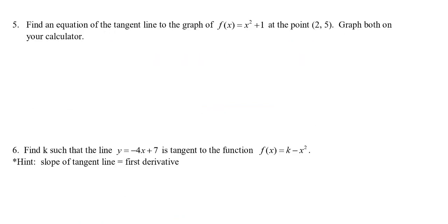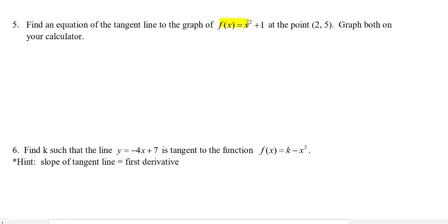Let's first start with a decently easy derivative so we can also graph it and see how we can look at our answer to make sure it makes sense. This question is asking us to find an equation of the tangent line to the graph of f(x) = x² + 1 at the point (2, 5). Graph both the function and its tangent line on your calculator.